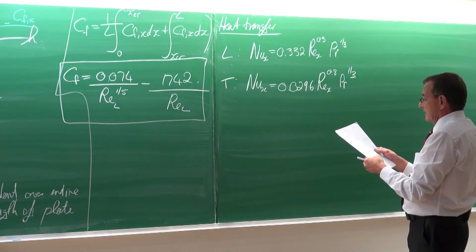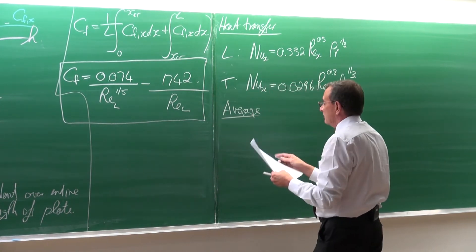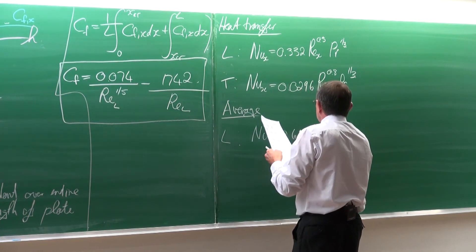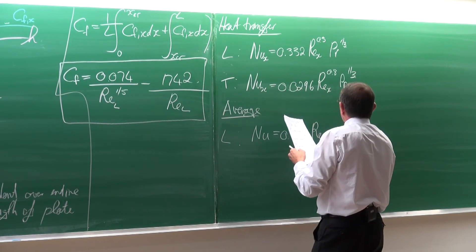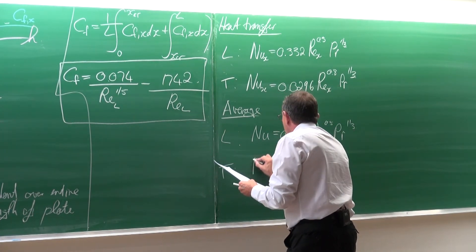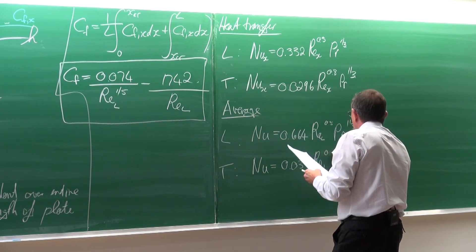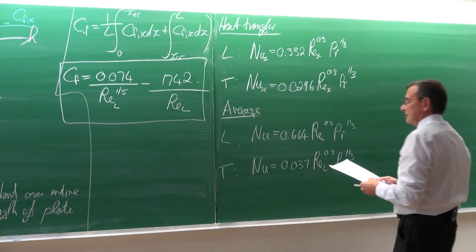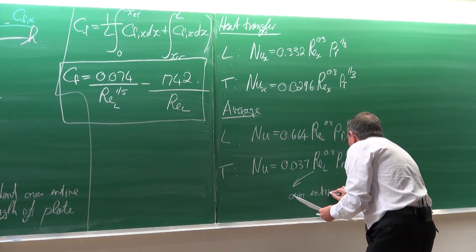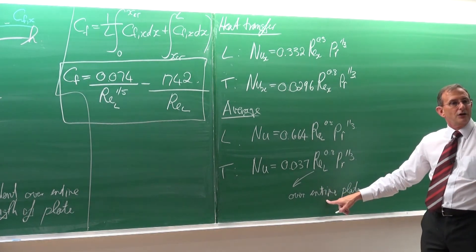For laminar flow, the local Nusselt number is Nu_x = 0.332 Re_x^0.5 Pr^(1/3), valid for Pr > 0.6 and Re_x < 500,000. For turbulent flow, Nu_x = 0.0296 Re_x^0.8 Pr^(1/3). The average values are: for laminar, Nu = 0.664 Re_L^0.5 Pr^(1/3); for turbulent over the entire plate, Nu = 0.037 Re_L^0.8 Pr^(1/3).